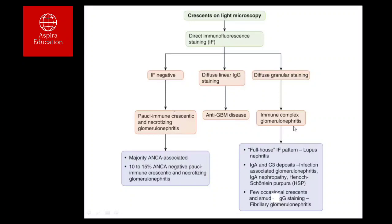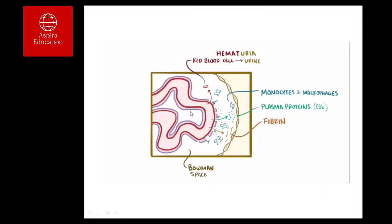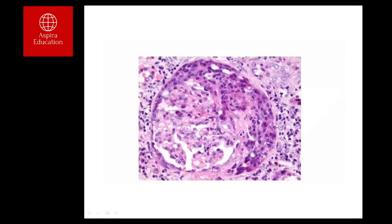Pauci-immune necrotizing glomerulonephritis is the pathology seen in patients with vasculitis — specifically small vessel vasculitis affecting the kidneys. Looking at the pathology image, a crescent is an extracapillary proliferation of inflammatory cells, predominantly monocytes and macrophages, also containing plasma protein and fibrin. You can see the glomerular capillary loop is patent, and outside it in Bowman's space you have the crescent — the proliferating inflammatory cells.